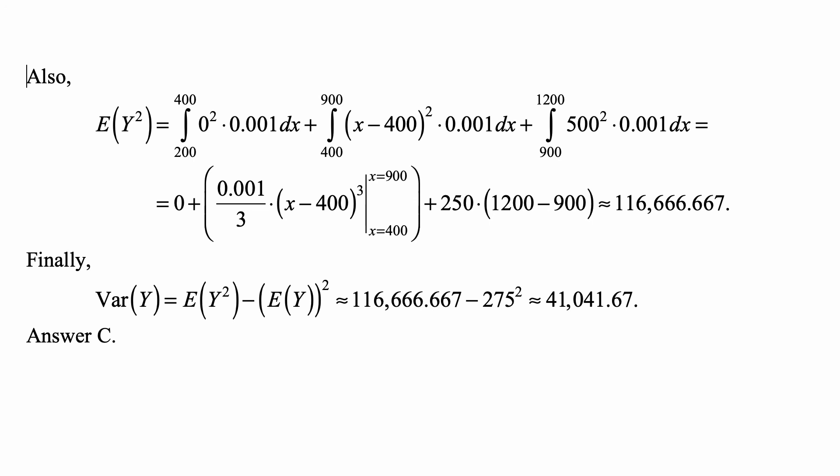The variance is the second moment minus the square of the first moment, so it's 116,666.667 minus 275 squared. This is approximately equal to 41,041.67, and that's answer C.